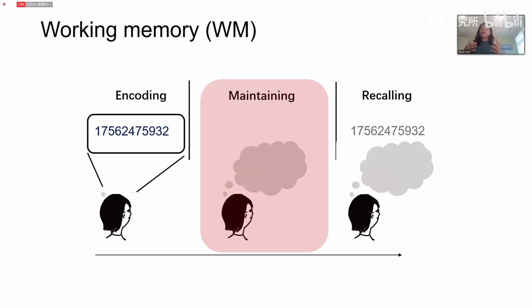We are particularly interested in the maintaining period because during this time you don't see anything, but information is certainly kept in your mind. That's a very interesting period — you can examine how the brain stores information that is no longer there. We recruited 30 human subjects and asked them to wear an EEG cap so that brain activities would be recorded simultaneously when doing this auditory sequence working memory task.